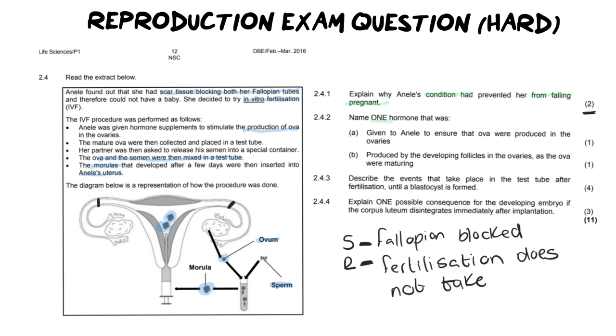It says, name one hormone that was given to Anele to ensure the ova were produced in the ovaries. This is a recall question. We should know this off the top of our head. What is the hormone that stimulates the production of ova? And we should all know that it is FSH or follicle stimulating hormone.